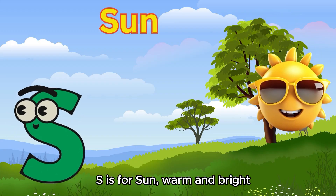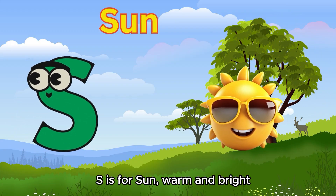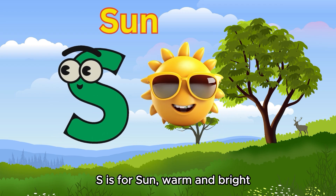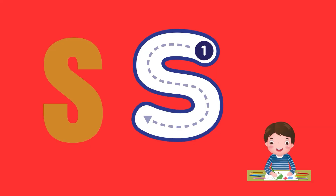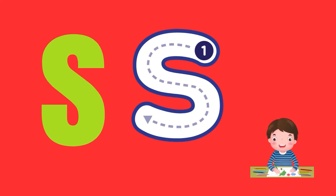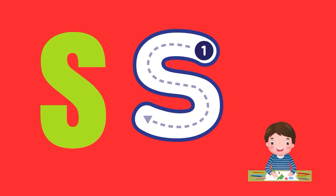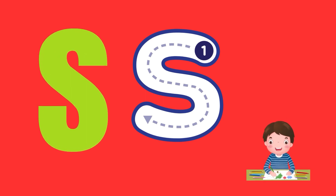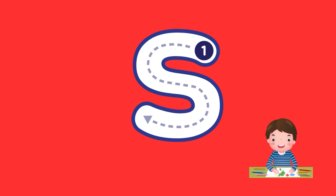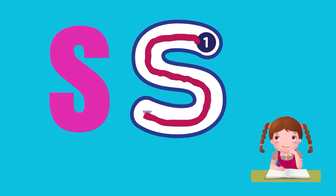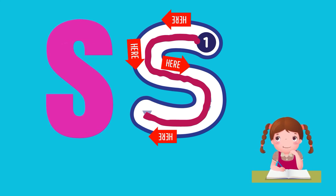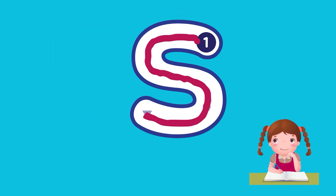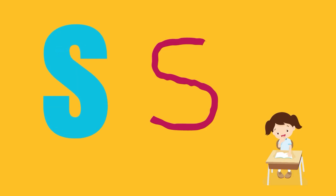Dear kids, as you know, S is for sun. Now let's start to write alphabet S. In alphabet S there is one step. Start from point one and draw a line downwards till the end of point one. This is alphabet S for you. Congratulations, dear kids! Now you have completed the alphabet S.